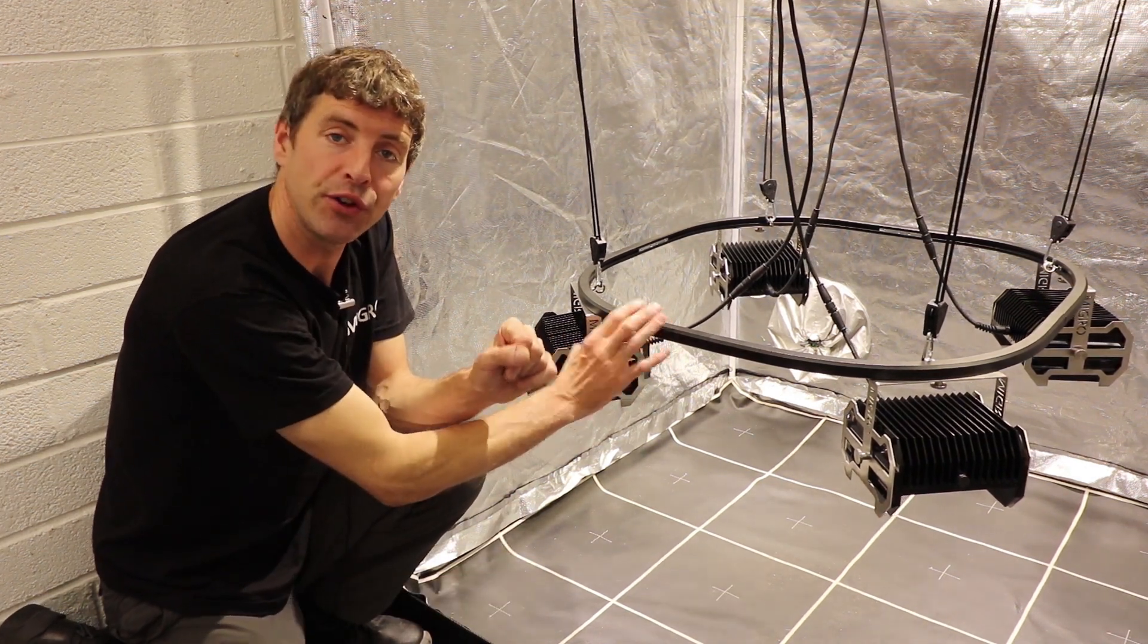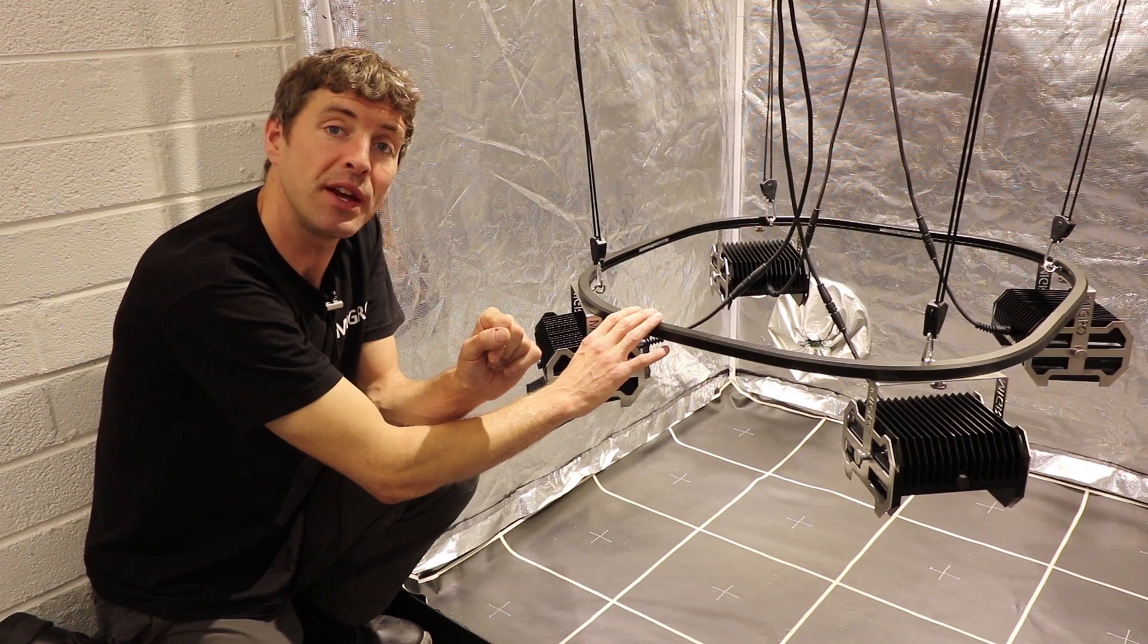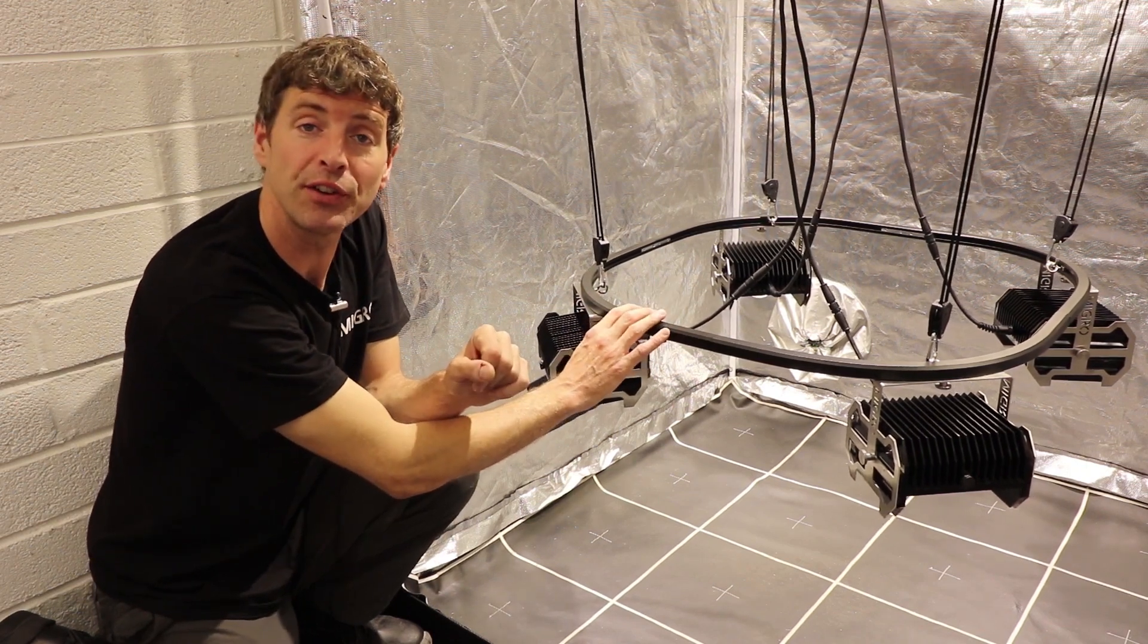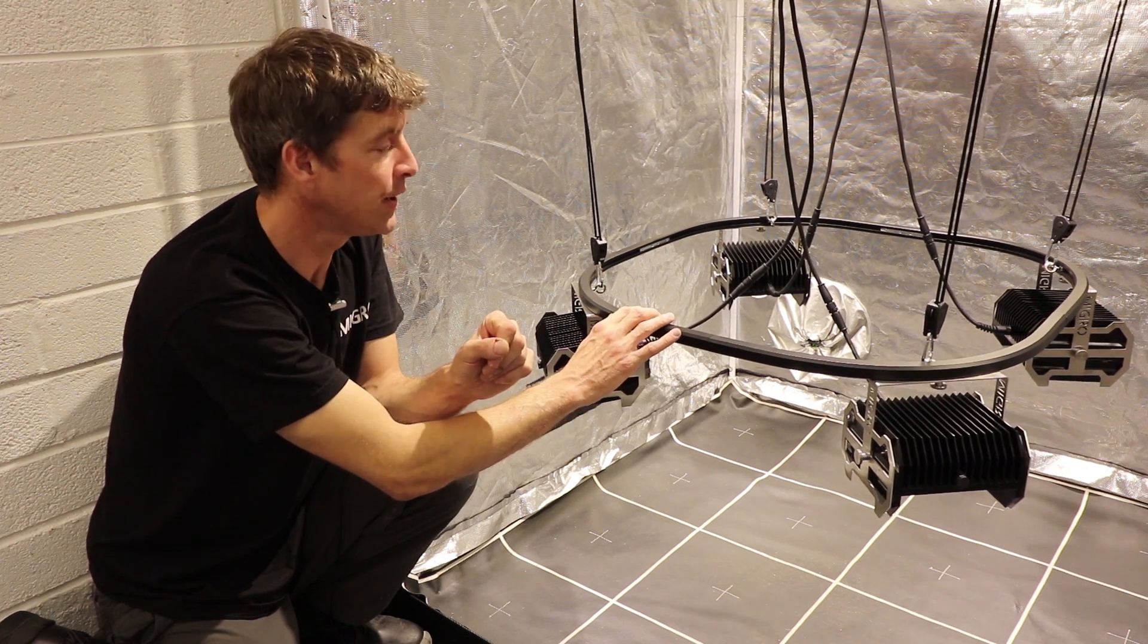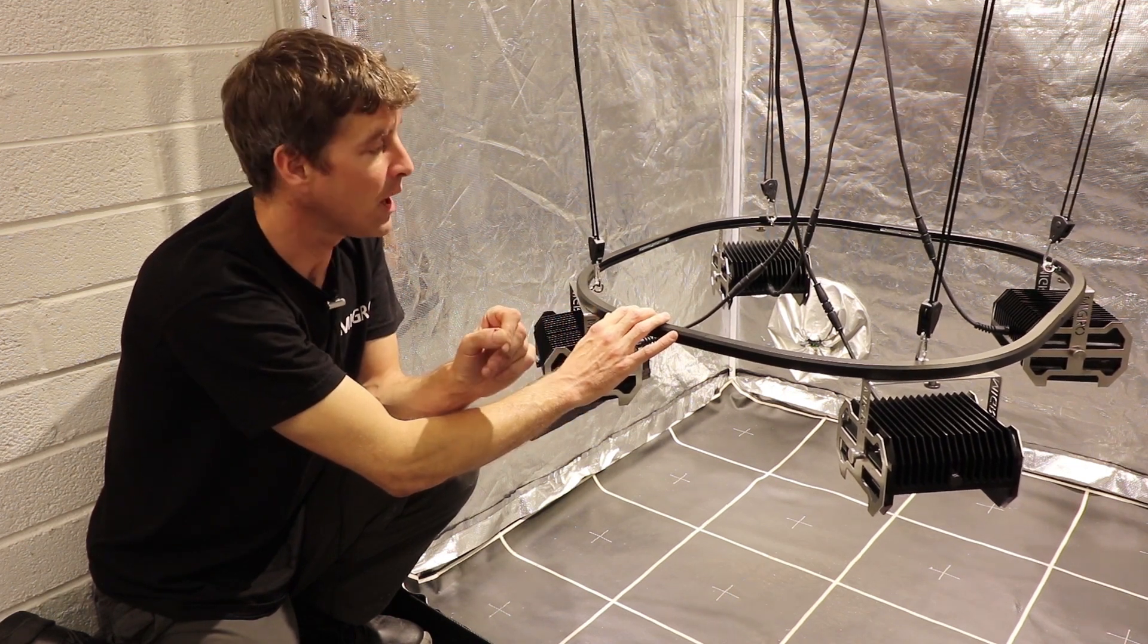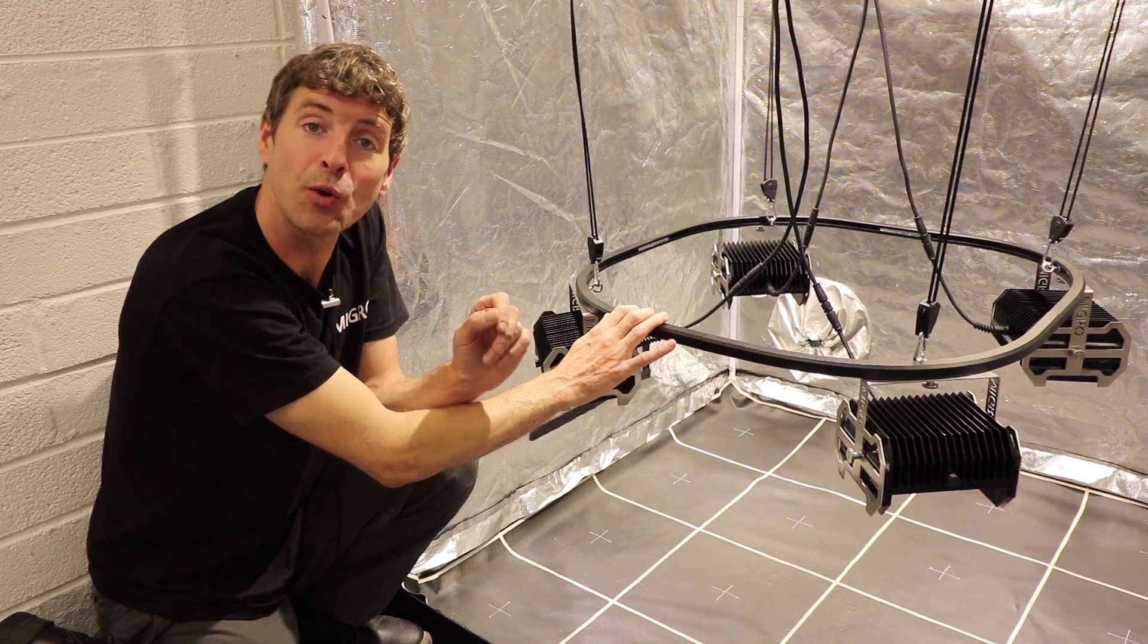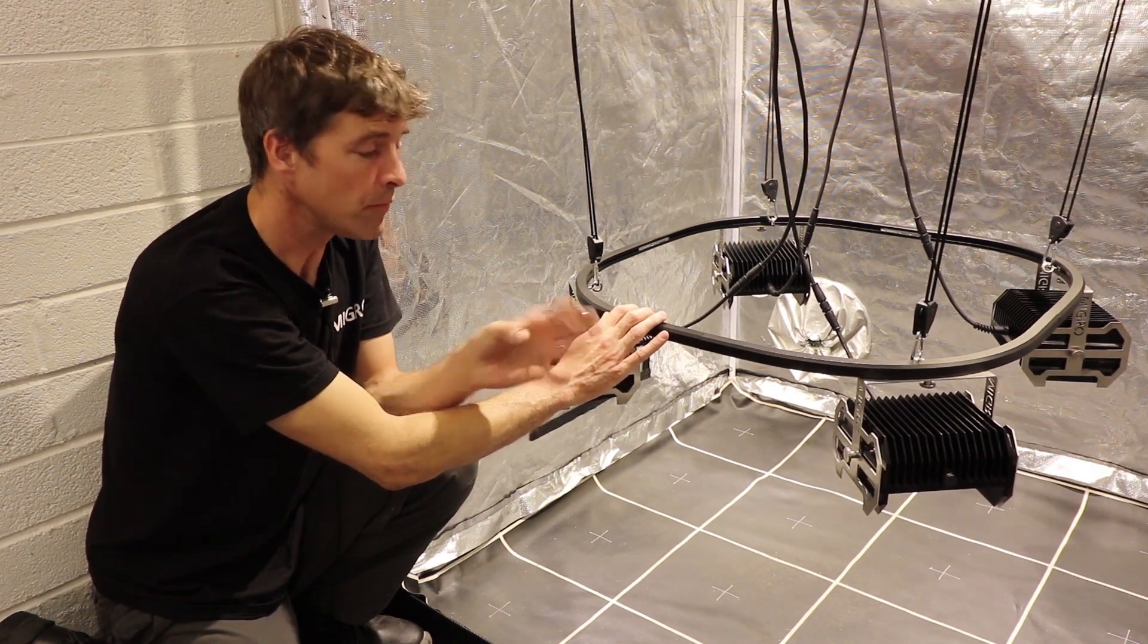In the early stages of the grow you can have the dimmers down to 40-50% and increase them up to 100% for the flower cycle. This ensures you minimise your electricity consumption and footprint, minimise heat and ensure you are matching the exact requirements of your plants as they mature.